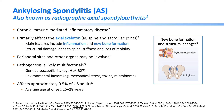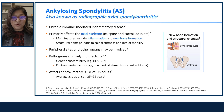There could be a genetic susceptibility, leading to HLA-B27 association. Environmental factors like mechanical stress, toxins, and microbiomes also play a role. It affects approximately 0.5% of U.S. adults, and the average age at onset is 25 to 28 years. Many patients would not know about this diagnosis until as late as 10 to 15 years after the first onset.